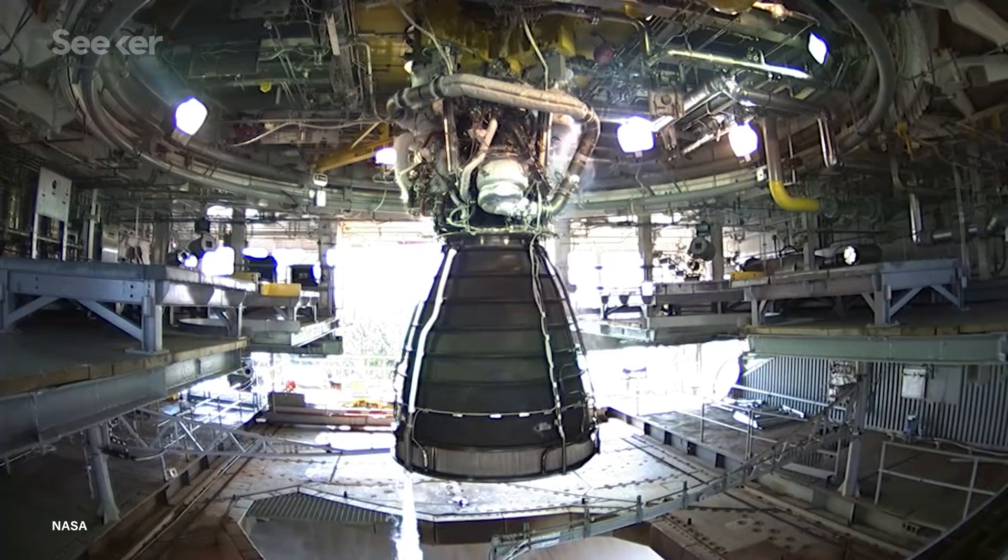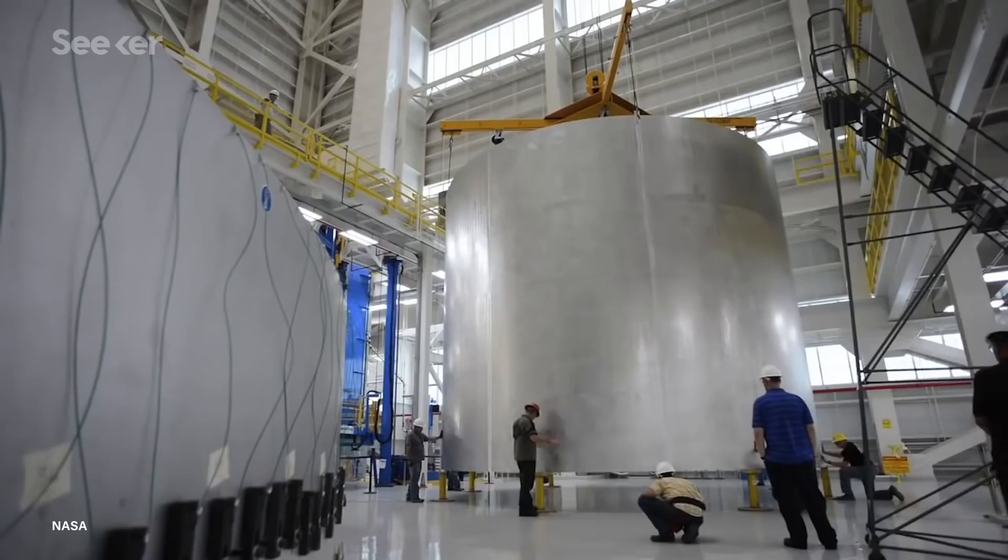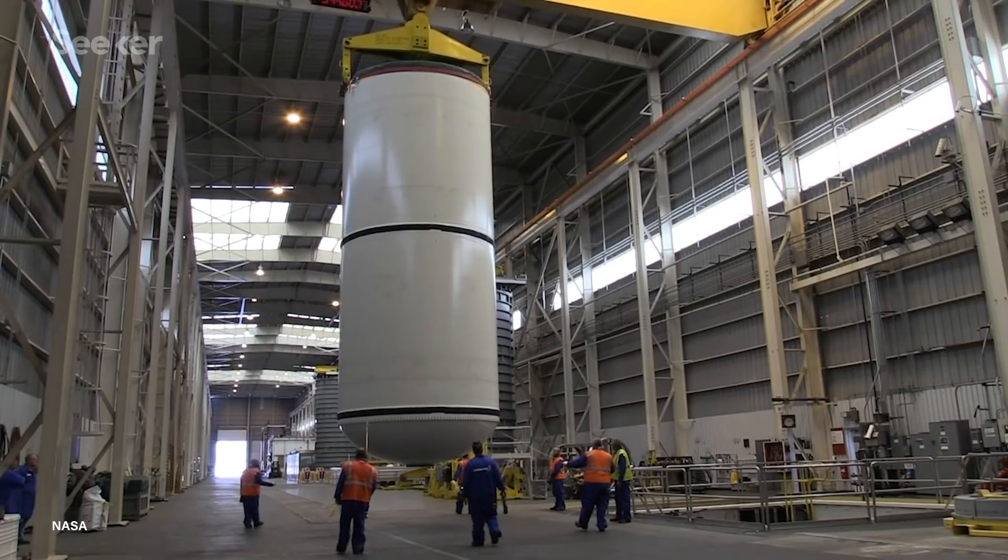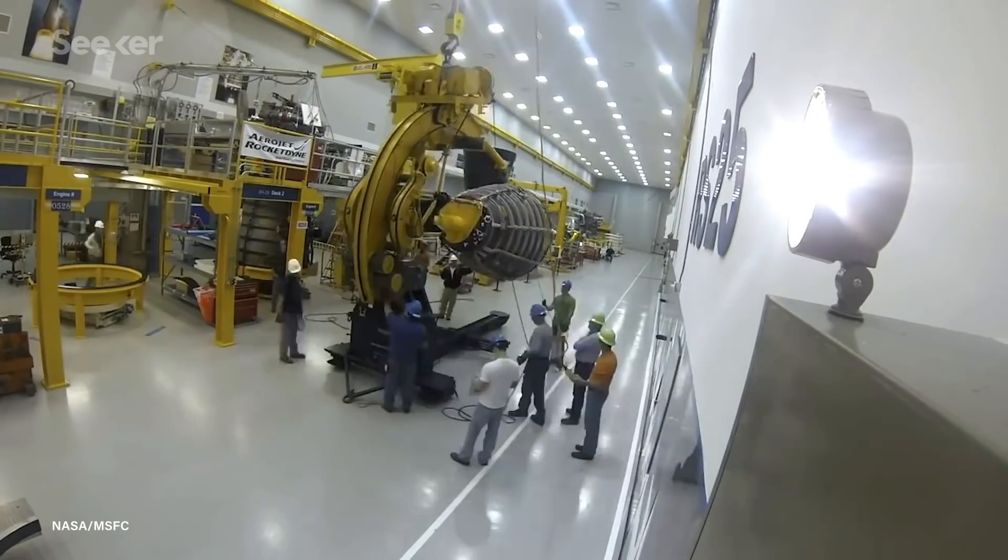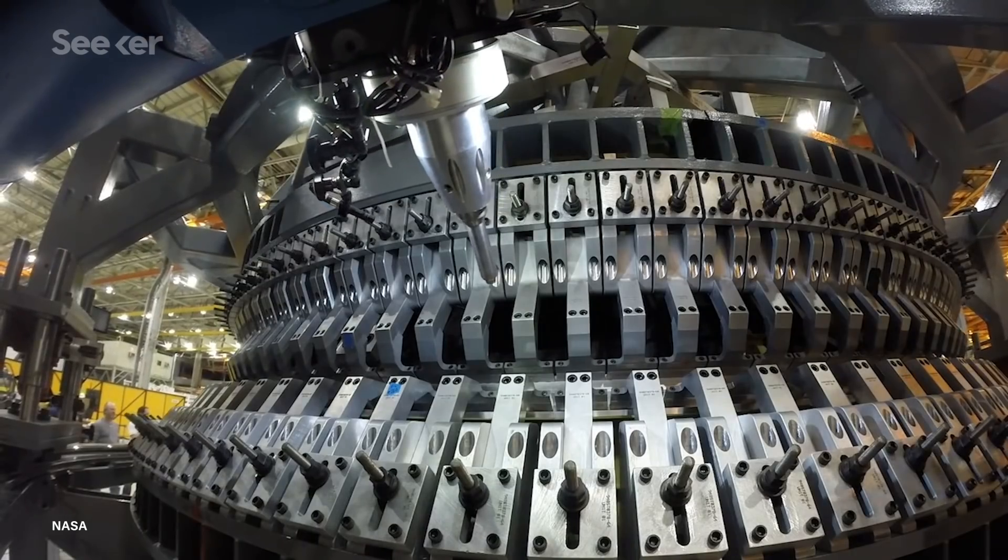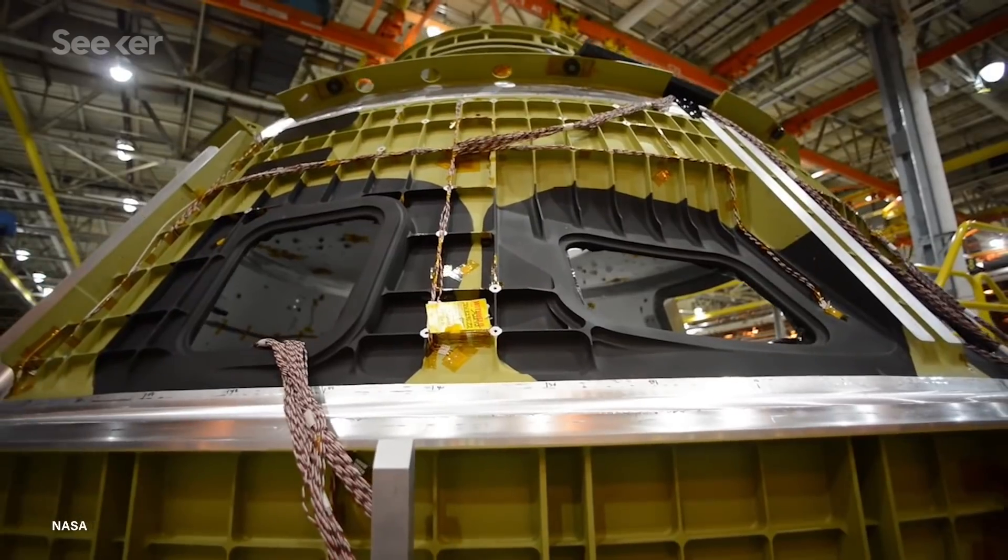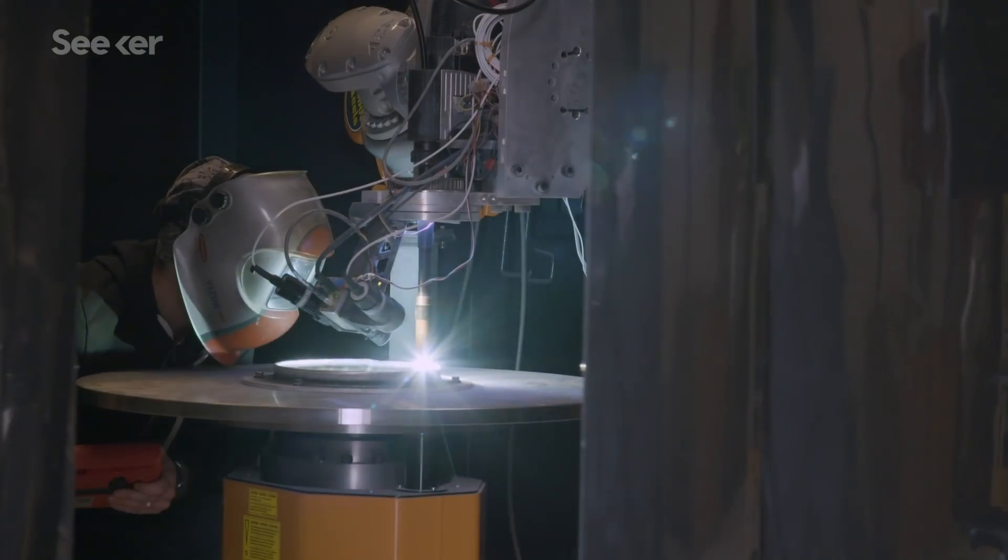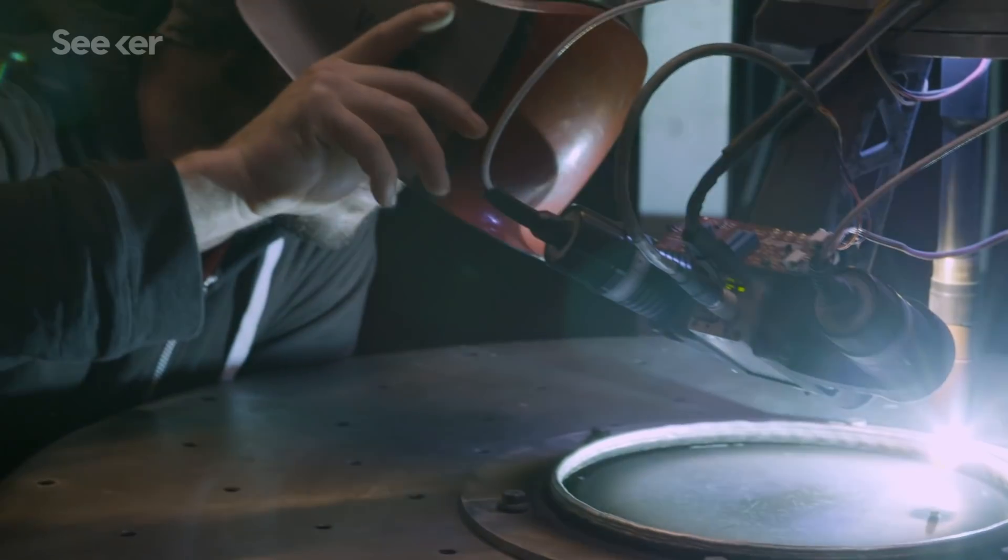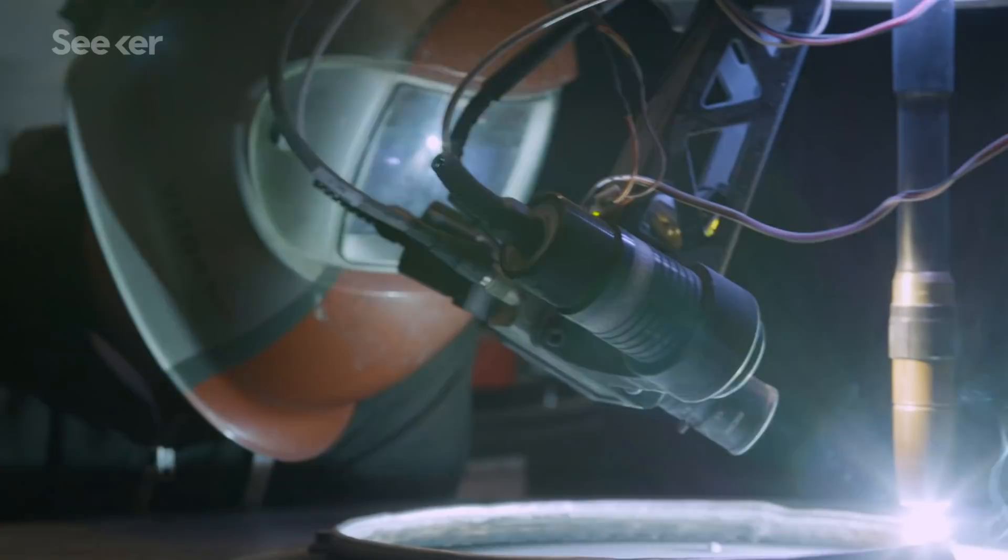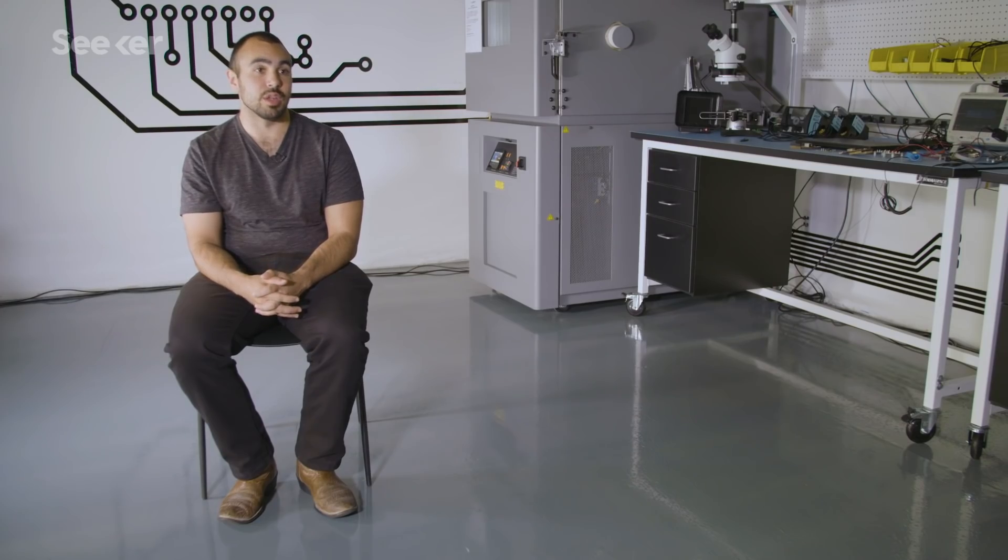There's two main advantages that we see by introducing the printing process to rocketry. The first one is reducing the part count on the rockets—traditionally rockets can have up to 100,000 parts on them, and we want to reduce that to about a thousand. The second area is in flexible manufacturing. When you have traditional manufacturing, you end up with a factory full of very expensive tooling. By introducing 3D printing as a baseline to the manufacturing process, you now have a flexible tool rather than a fixed tool. And that makes it much easier to change and modify our designs, especially compared to anyone else in the industry.